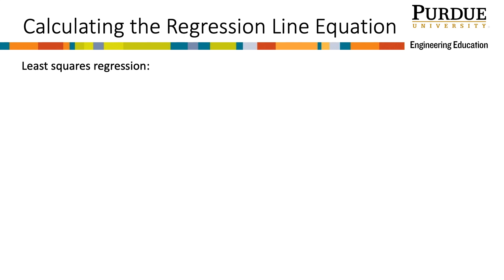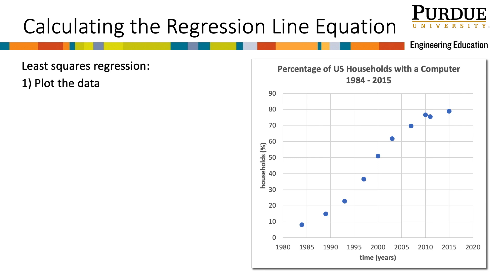To calculate least squares regression manually, the first thing that needs to be done is to plot the data. The data are plotted here in Excel. The graph represents how the percentage of U.S. households with a computer increased from 1984 to 2015.